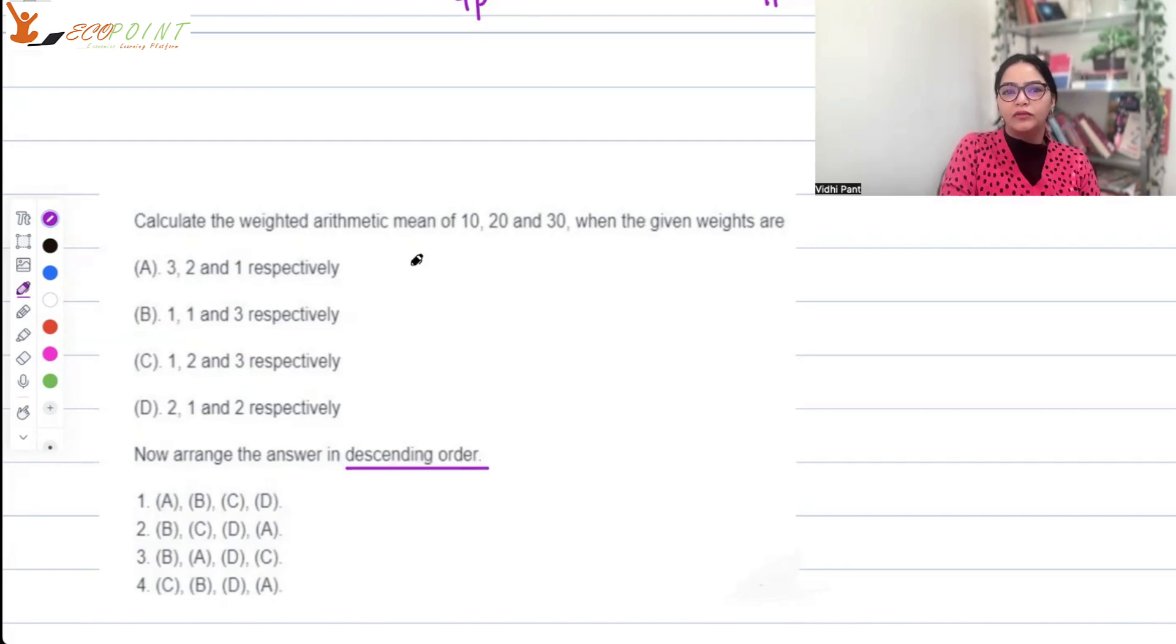Let's quickly find out the mean. If 3, 2, 1 are the weights, the mean will be 30 + 40 + 30 divided by the total weight. Remember, the weighted average is Σ(wi × xi) / Σwi, where wi are the respective weights. The total weight is 6, so you have 100/6.